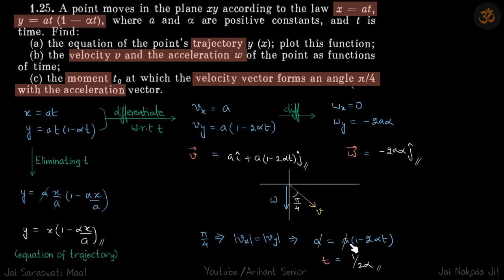Now ideally it should be plus minus. So if you do it other way around you will see it will be 2αt minus 1. So let us write both the solutions